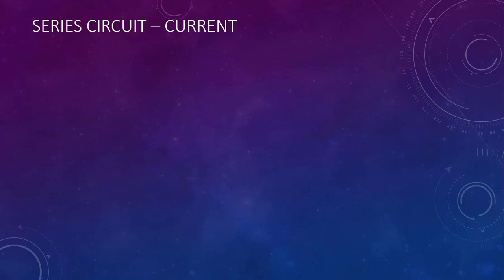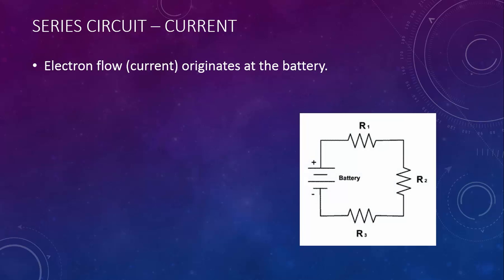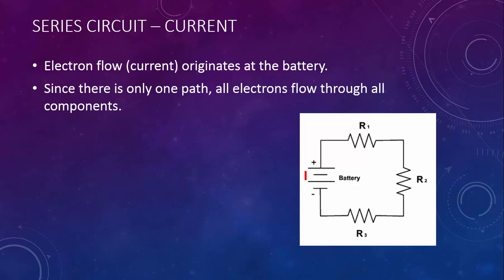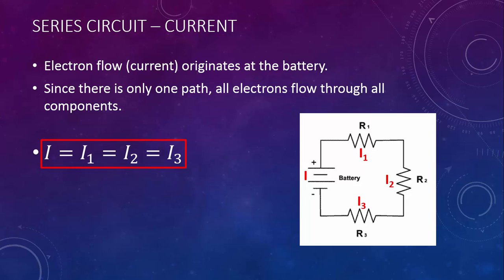Now let's look at current. The electron flow — the current — originates at the battery. Since there is only one path, all the electrons have to flow through all of the components. If 100 electrons come out of the battery, then all 100 travel through the first resistor, all 100 through the second, and all 100 through the third. The current in a series circuit is the same through each component.